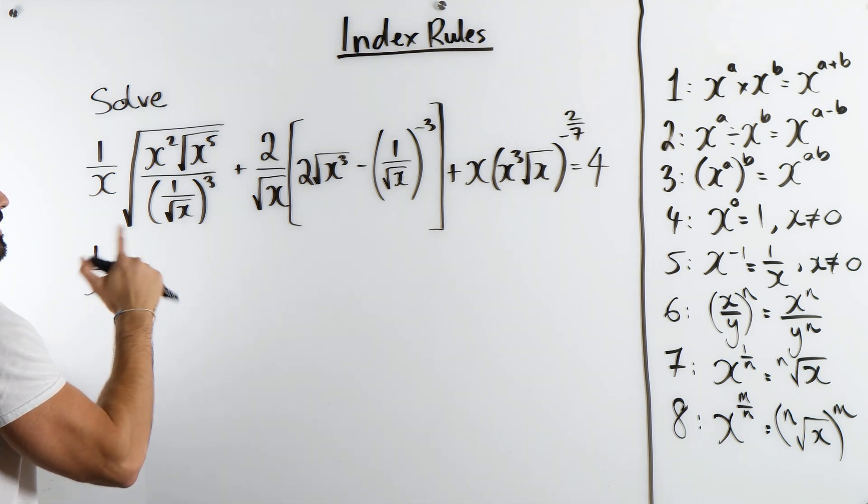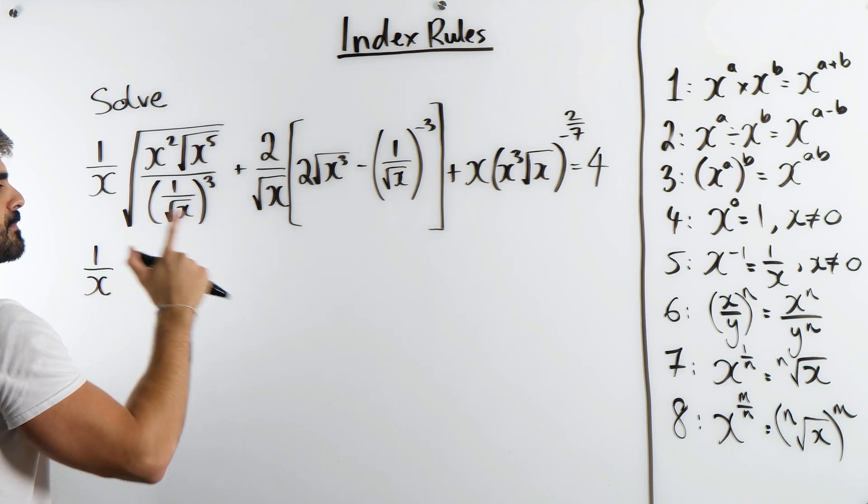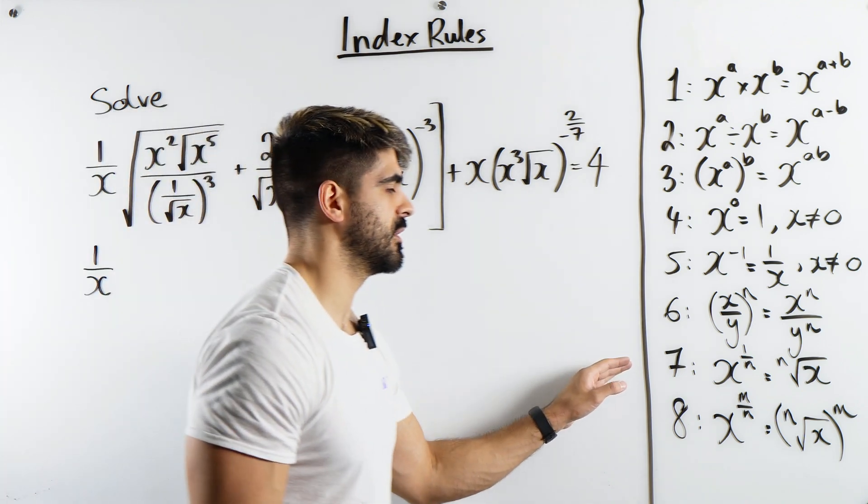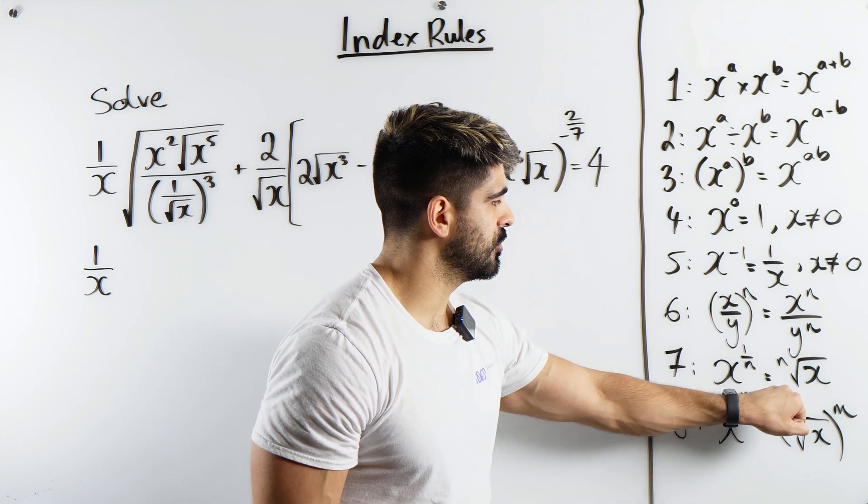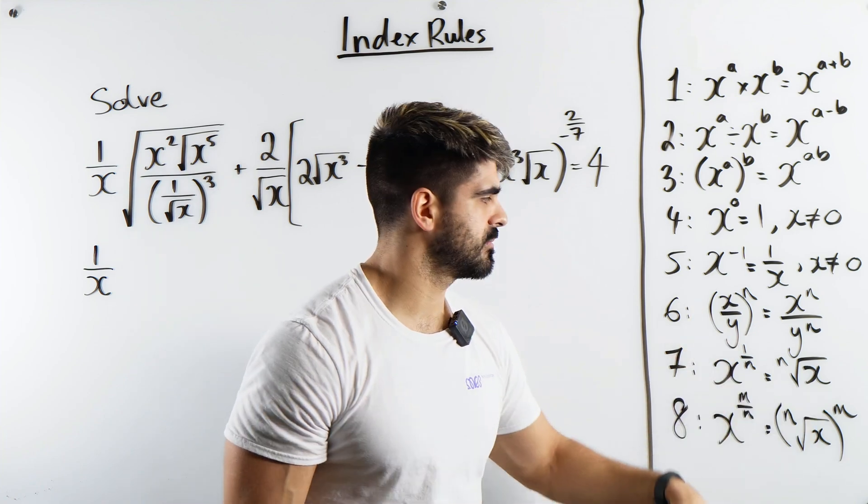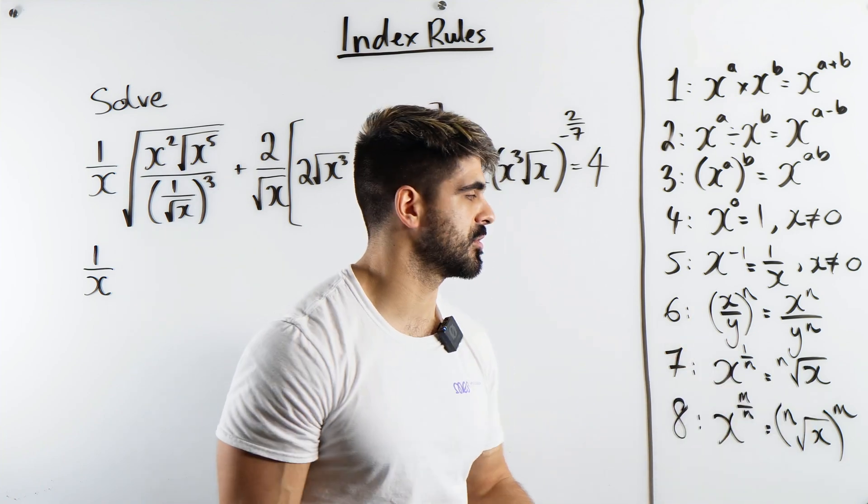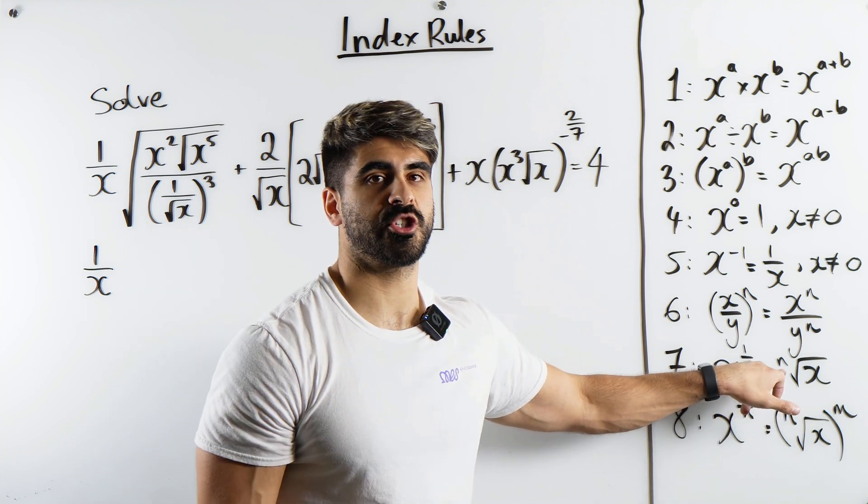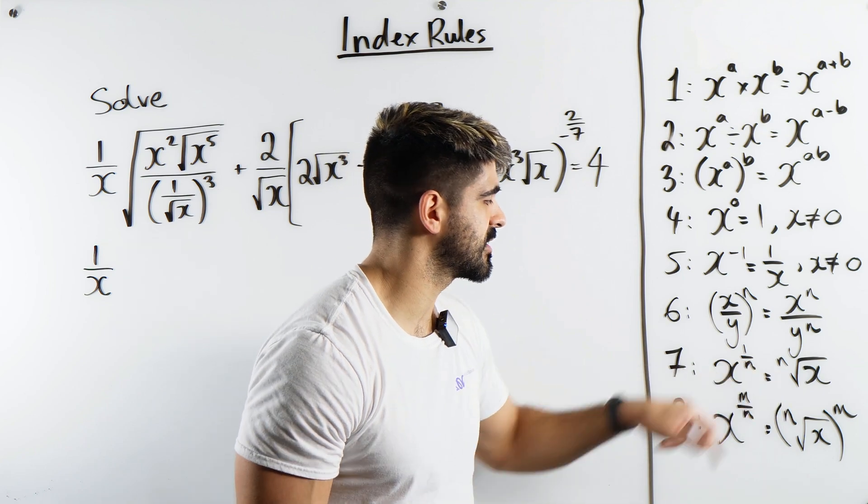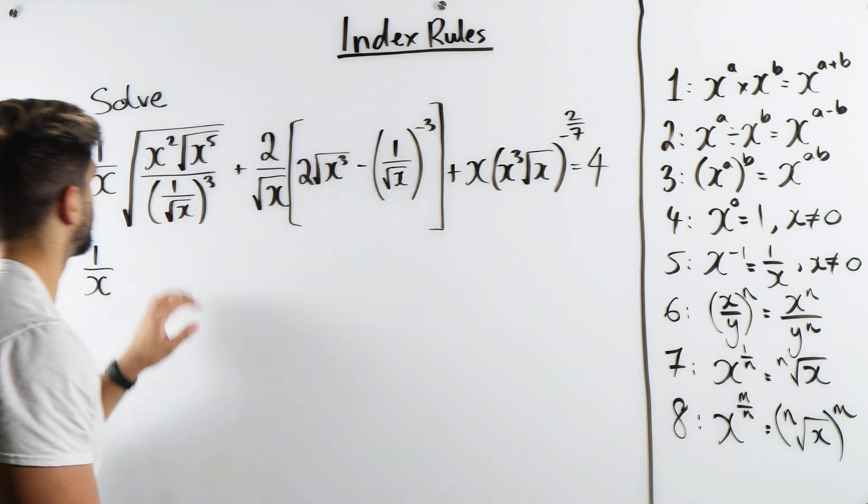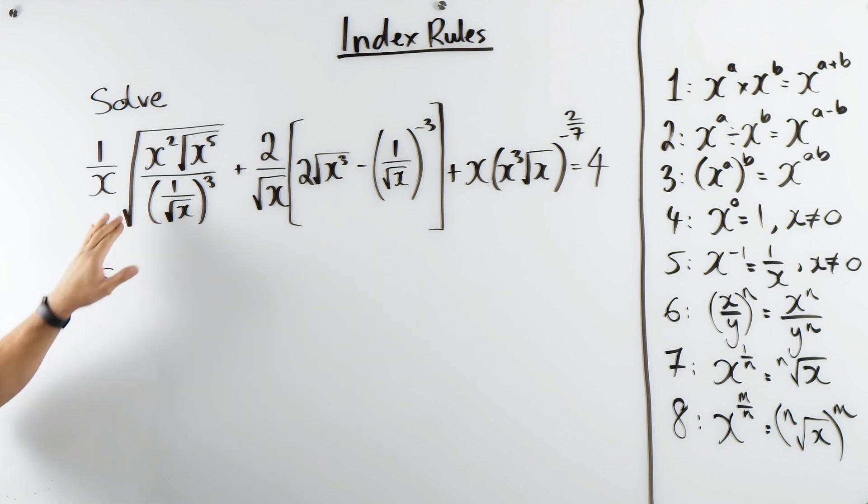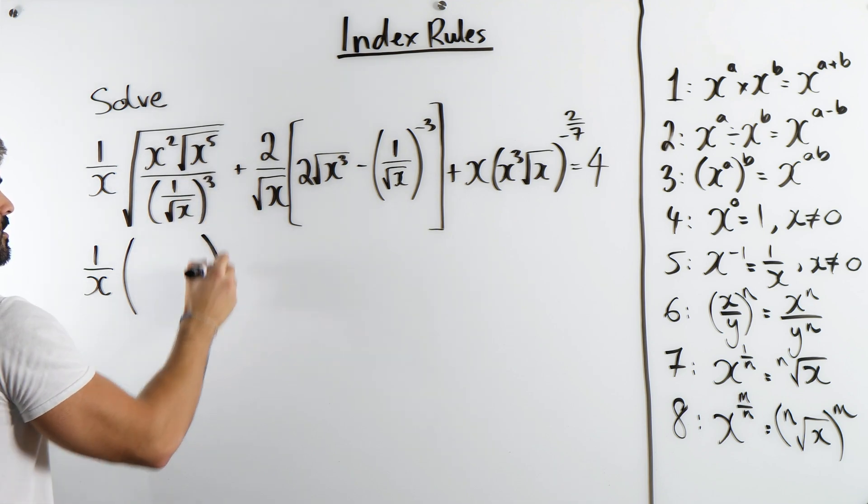So root, we explained in the last video that root is power half and here we can refer back to rule 7. Root means the second root, what multiplies by itself to give you a certain value. There's a 2 there which we don't actually write down when it comes to roots. So it's x to the power of a half. So whatever is in here is all raised to the power of a half. That's what this root means. So let's change that.